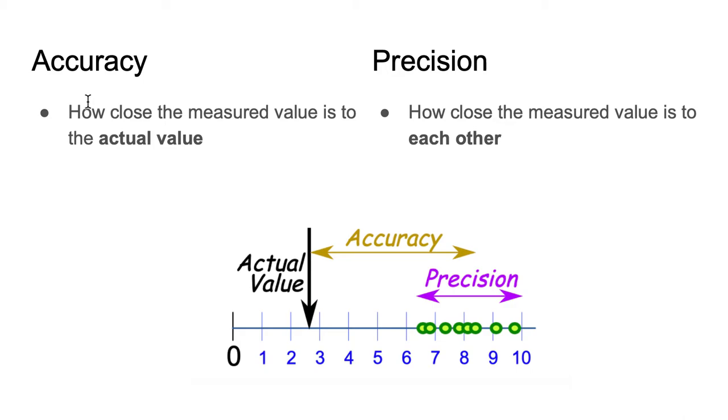So accuracy and precision are used like similar words in your literature class, but it is actually very different in the world of chemistry. First, accuracy is how close the measured value is to the actual value. And precision is how close the measured values are to each other. I have posted this good picture to represent how accuracy and precision differ.